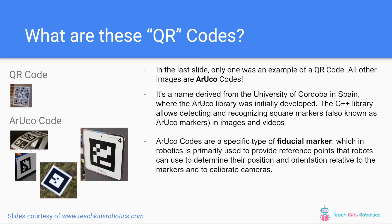These ArUco codes are a specific type of fiducial marker, which in robotics is primarily used to provide reference points that robots can use to determine their position and orientation relative to the markers, and to calibrate cameras. We're going to learn about why this is important in robotics — in knowing where you are, knowing your pose, and being able to localize yourself.